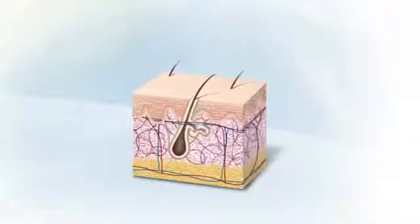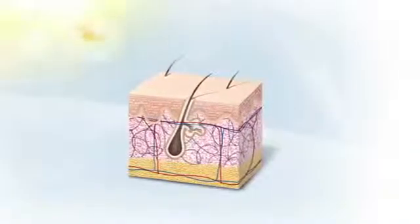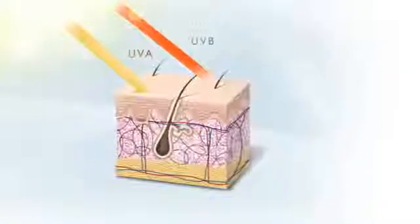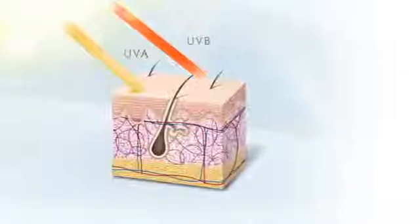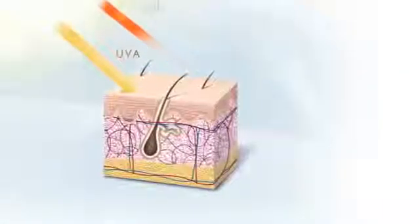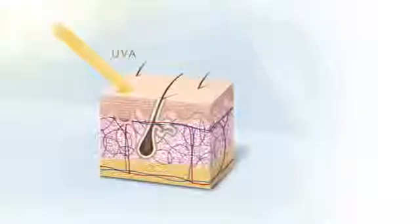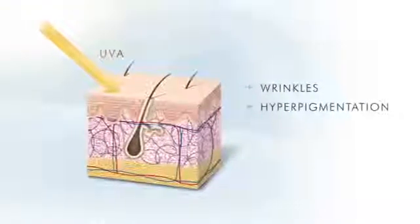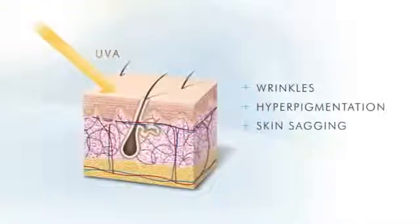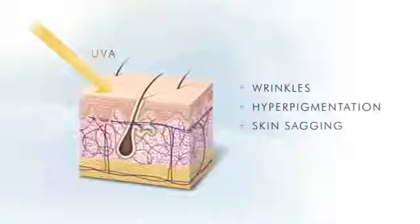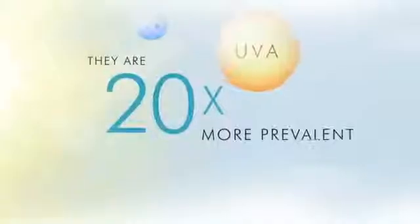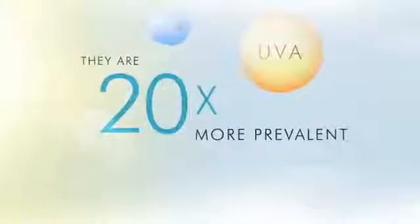Ultraviolet A and Ultraviolet B rays can cause changes to your cells and the appearance of your skin. UVA rays cause wrinkles, hyperpigmentation, skin sagging, and most importantly, skin cancer. They are 20 times more prevalent than UVB rays.